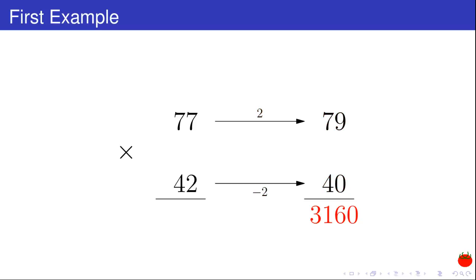Second step. It's then easy to get the result of the multiplication, 79 times 40. We get 3,160.